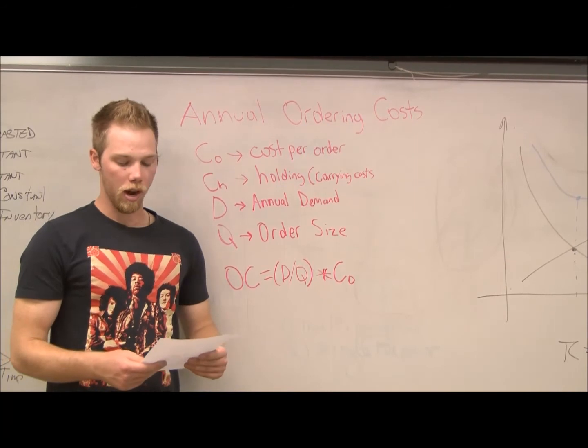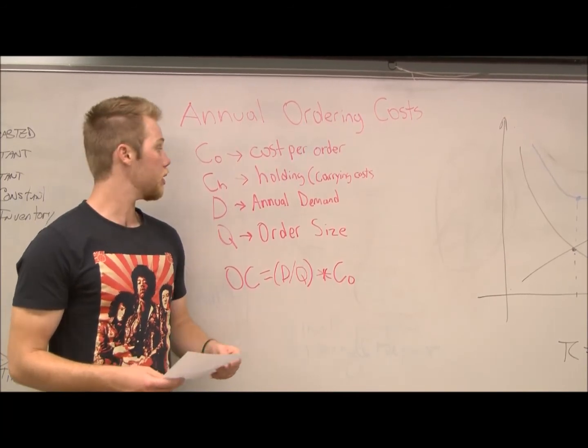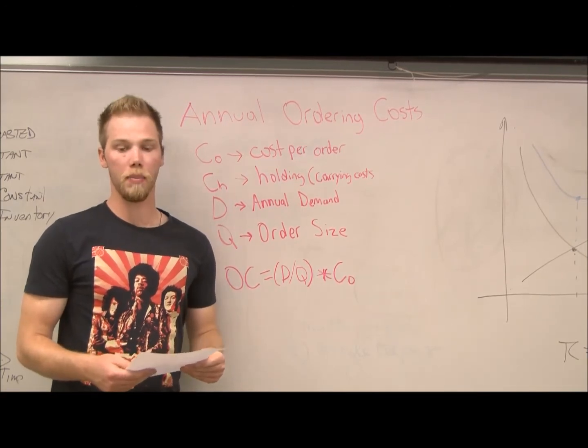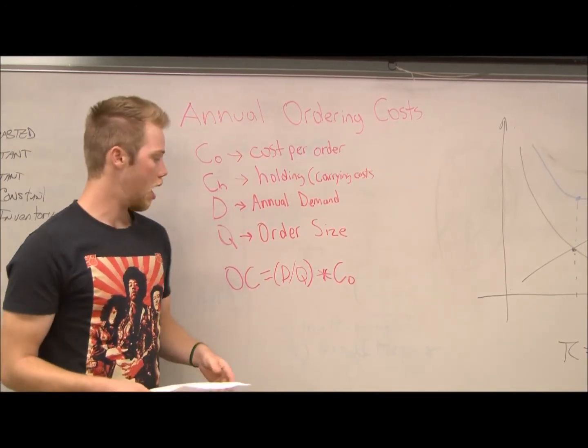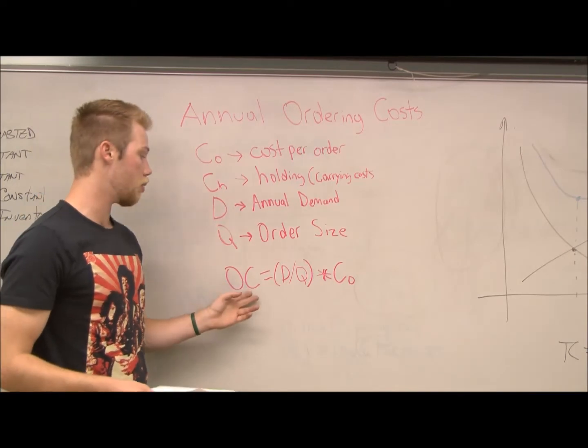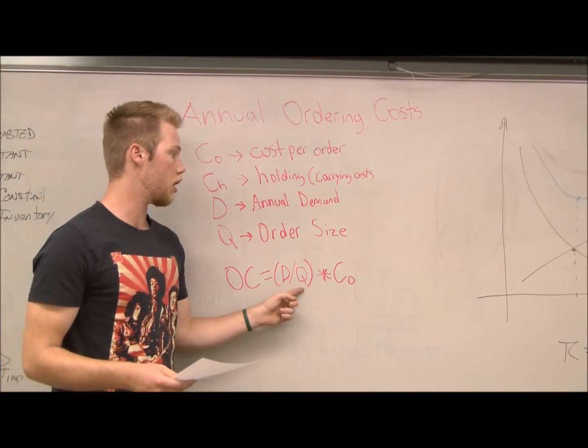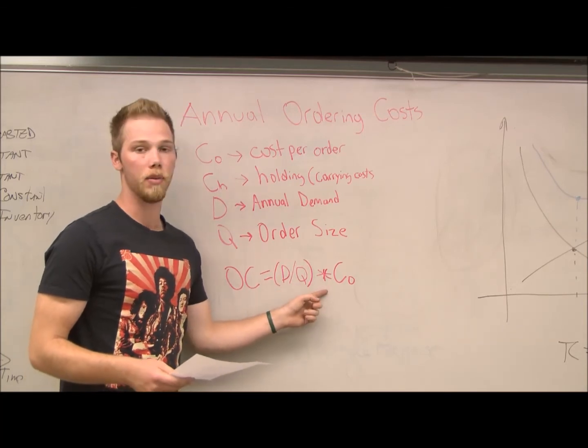Annual ordering costs is calculated using these variables. Annual ordering costs is the number of orders per year multiplied by how much it costs to order. Illustrated by this equation, which is ordering costs equals annual demand divided by order quantity, or order size, times ordering cost per order.